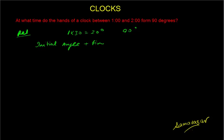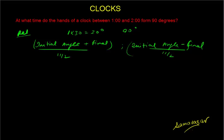So I told you that you have to do initial angle plus final angle divided by 11 by 2, and initial angle minus final angle divided by 11 by 2. This is your basic formula. Let's do this first: initial angle 30 degrees plus 90 degrees divided by 11 by 2, you get 21 9 by 11 minutes.